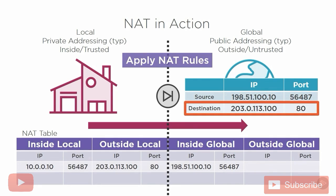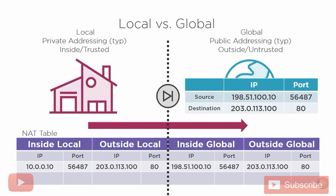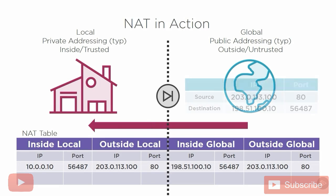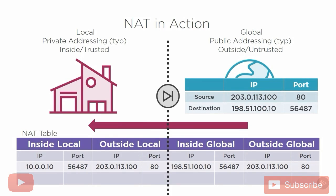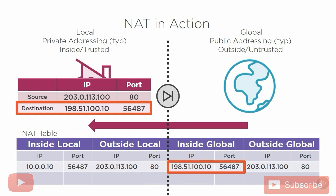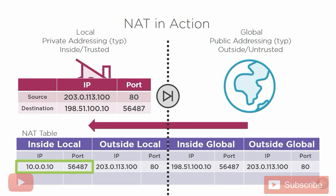Before forwarding the message, we record the outside global address — our destination address — and then forward the message out to the internet. The website processes it and returns the reply to our home network. The destination address on the reply is 198.51.100.10. We look that up in our NAT table as our inside global address, then translate the destination back to our inside local address, 10.0.0.10, and forward the message on to the workstation.